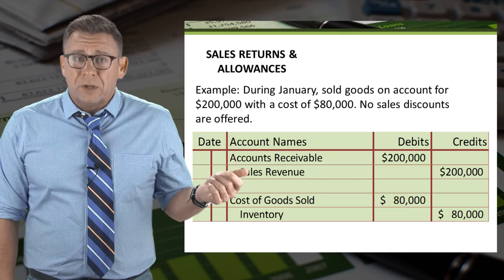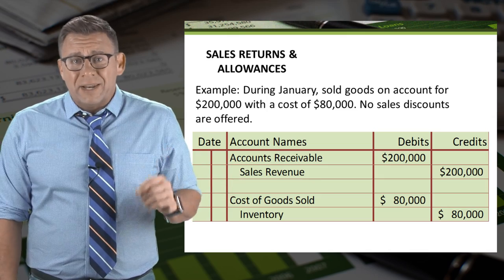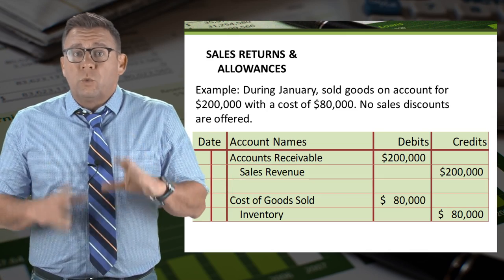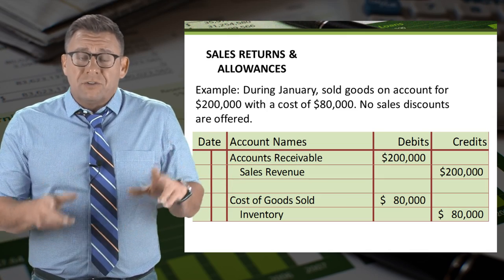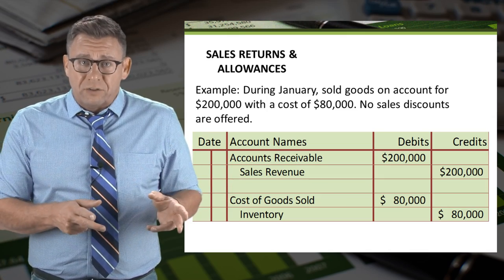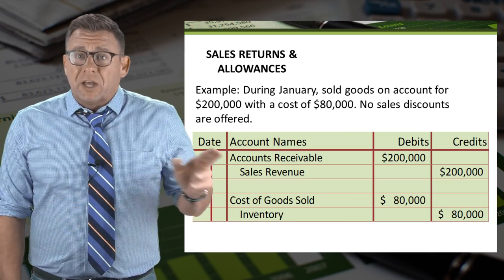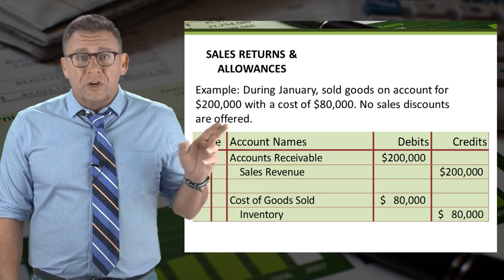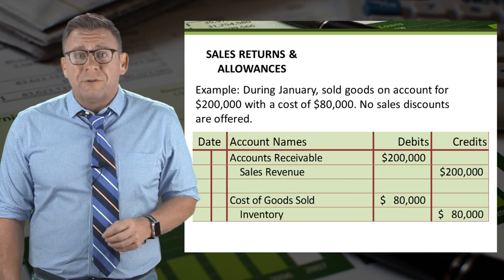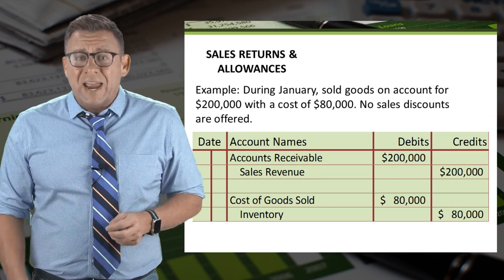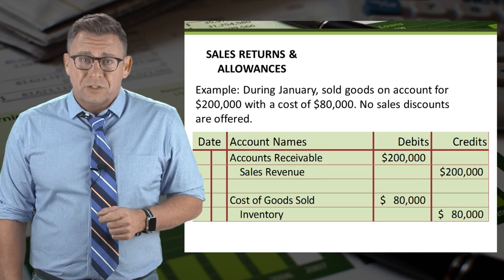We debit accounts receivable and credit sales revenue for the revenue amount of $200,000. We debit cost of goods sold and credit inventory for the cost of $80,000.